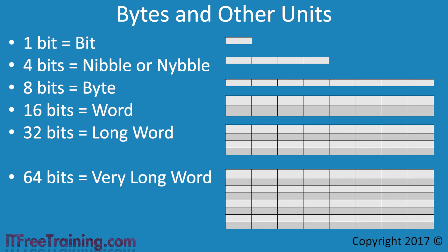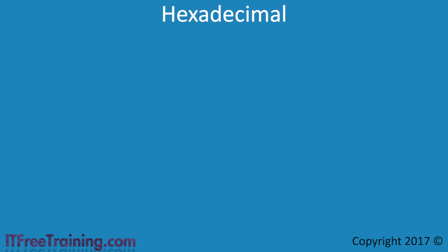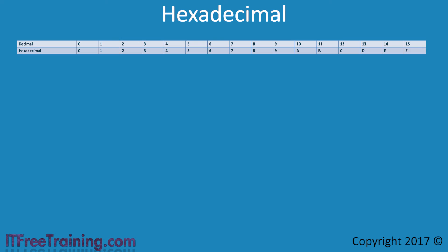Now I will look at hexadecimal. Hexadecimal uses 16 as a base. Since the standard number system that we use is base 10, this means that there are 6 values that we cannot use a single digit to represent. To make up for this, letters A through F are used. As shown in the table, 0 to 9 are the same for both decimal and hexadecimal. The values 10 through 15 change to letters — for example, 10 is the letter A and 15 is the letter F.